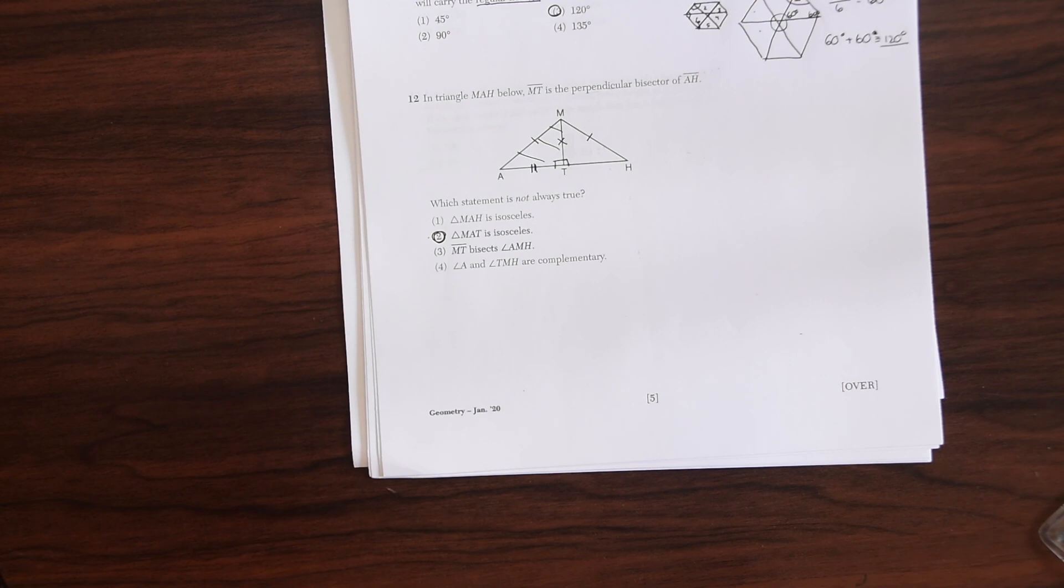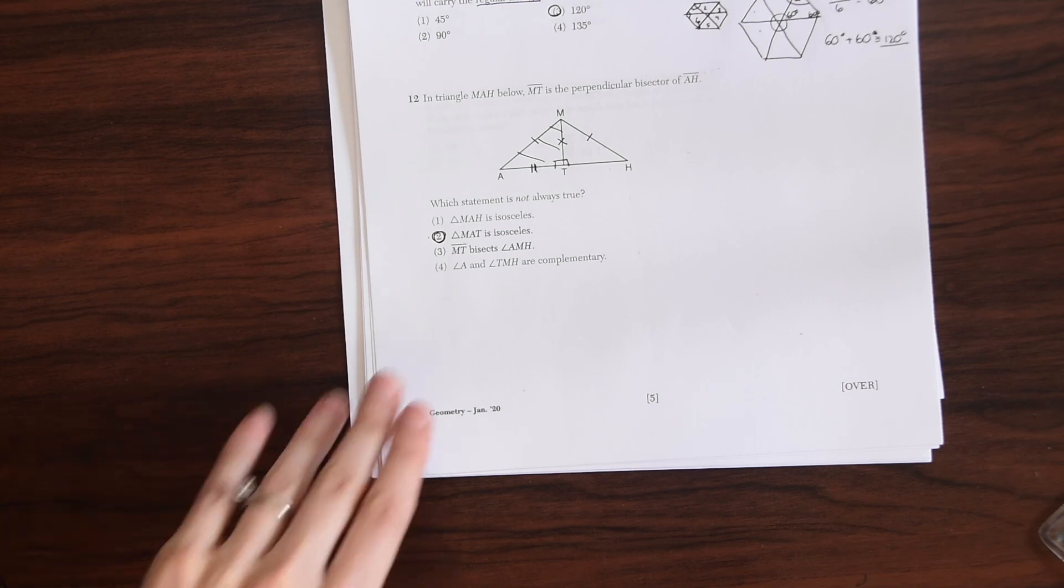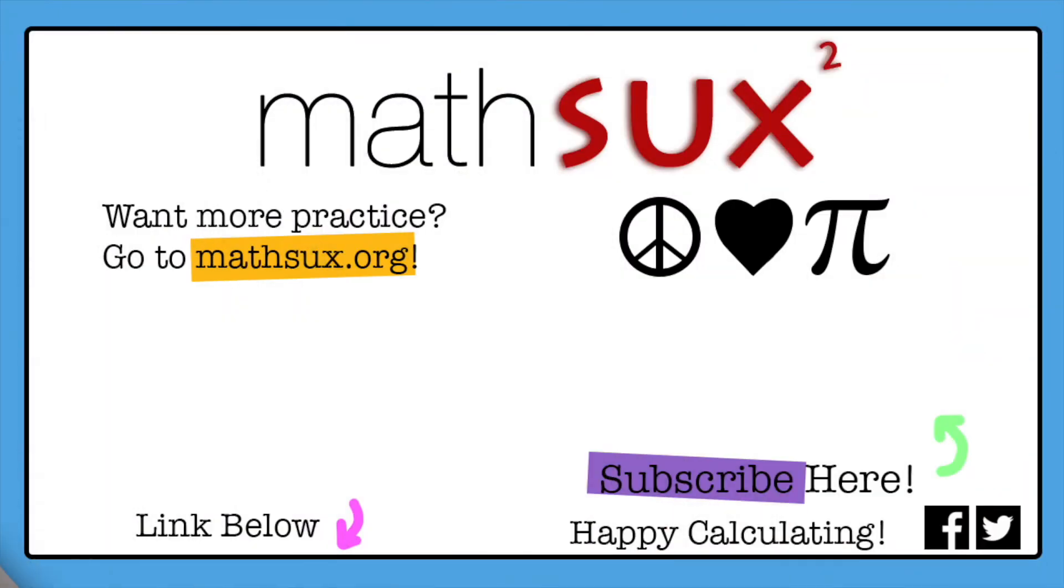Triangle MAT is not always going to be isosceles. Need more practice? Check out MathSucks.org for more questions. Link below. Also, don't forget to subscribe. Happy calculating!